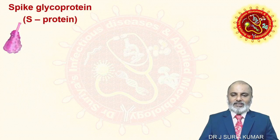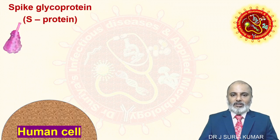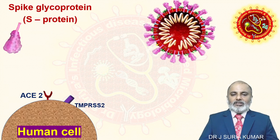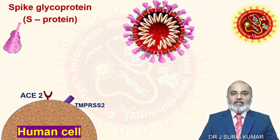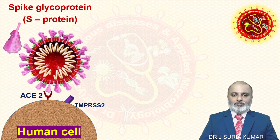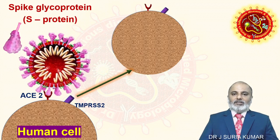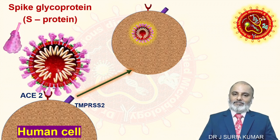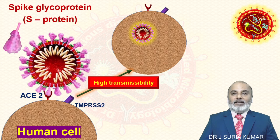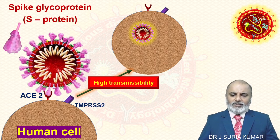Recollecting the pathogenesis: the human cell has a receptor called ACE2, with co-receptor TMPRSS2. This SARS virus has a spike protein that specifically attaches to ACE2 with the help of co-receptor TMPRSS2, facilitating the entry of the virus into the cell. SARS-CoV-2 has higher tropism over ACE2, so there is higher transmissibility than earlier SARS viruses. That's why the spike protein is so important.